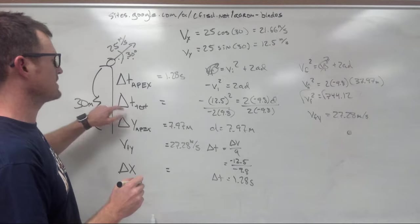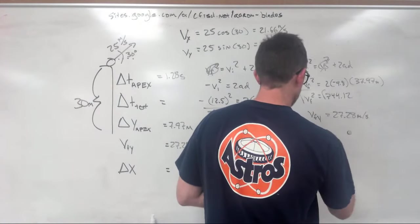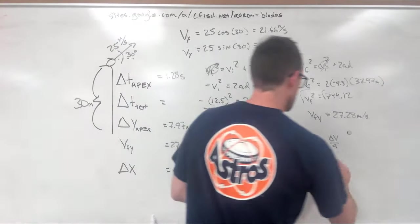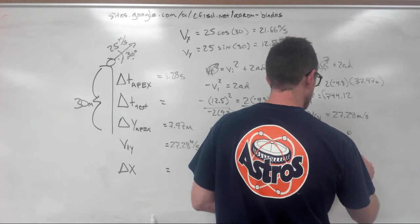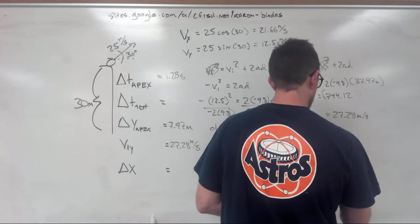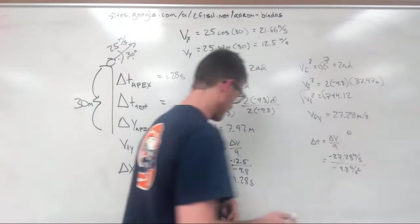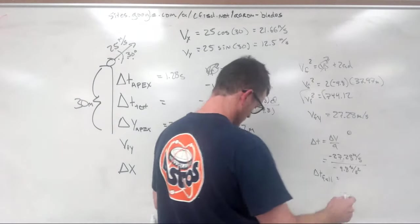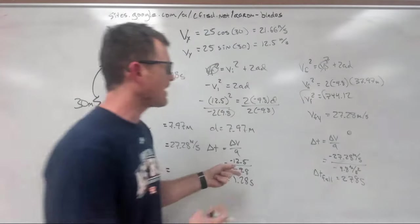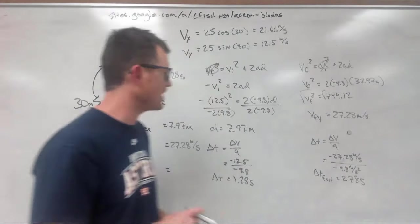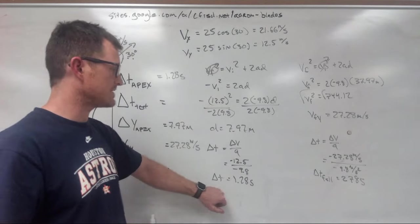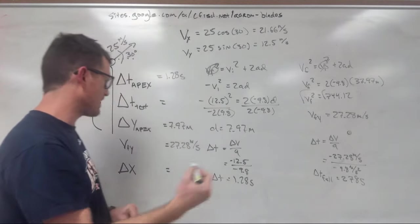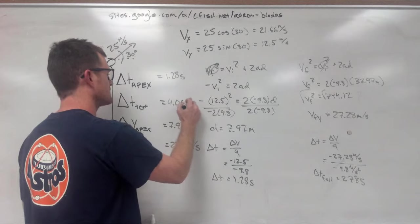Now we're going to go ahead and try to figure out this total time. And again, we're going to use our old friend delta T equals delta V over A. We've figured out what our final velocity is as it hits the ground, we already know our acceleration, and we end up with negative 27.28 meters per second divided by negative 9.8 meters per second per second. And that gives us a fall time of delta T fall equals 2.78 seconds. You may be thinking that our total time in the air is this 2.78. However, we actually flew up for 1.28 seconds and then flew back down for 2.78 seconds. We're going to have to add those together to get how long it was up and then back down too. So when we add those together, we end up with 4.06 seconds.